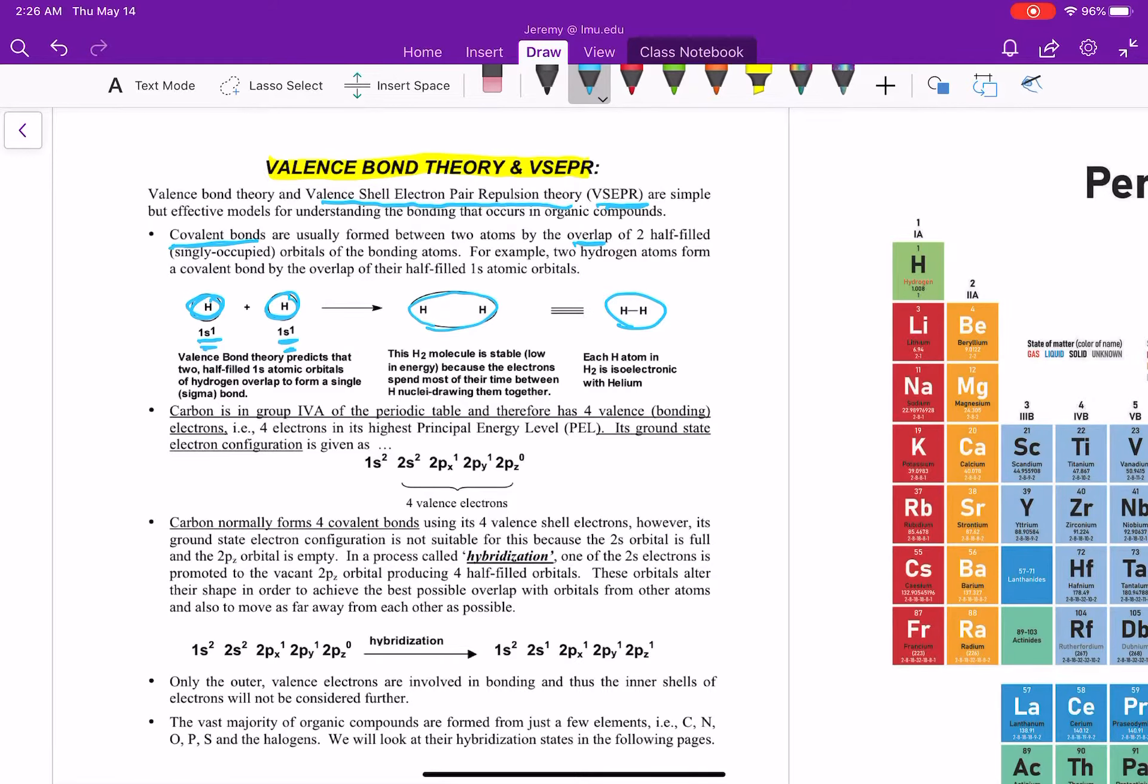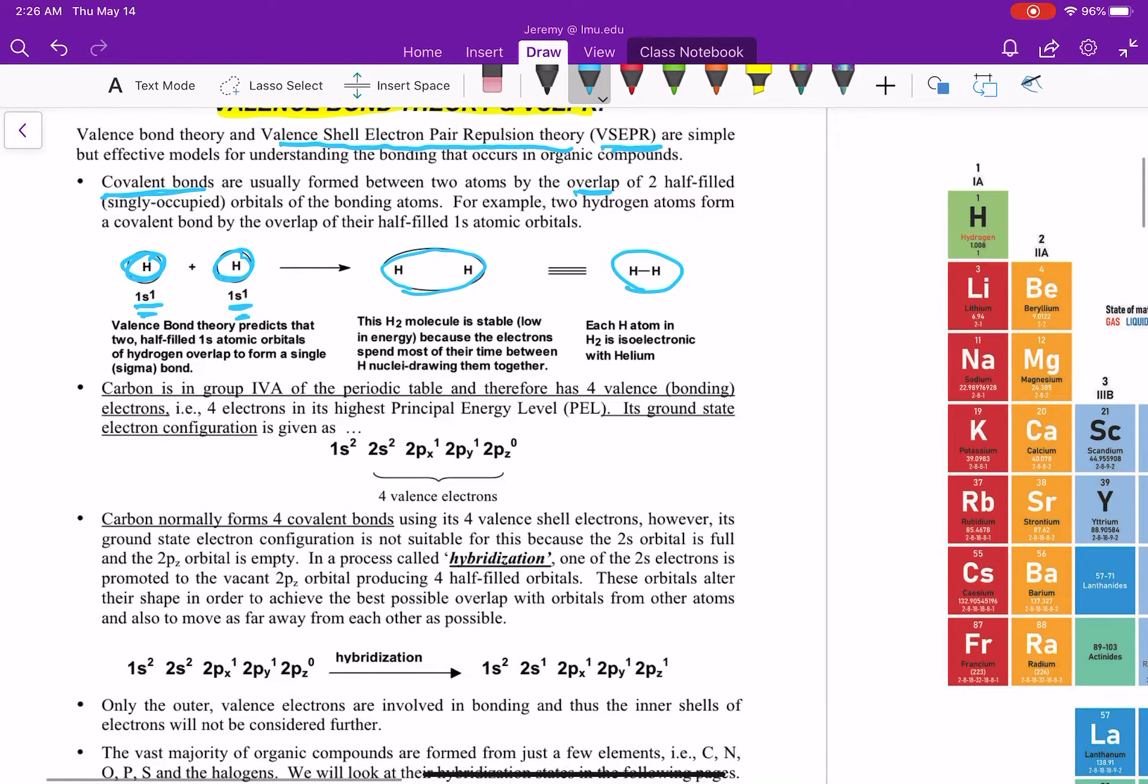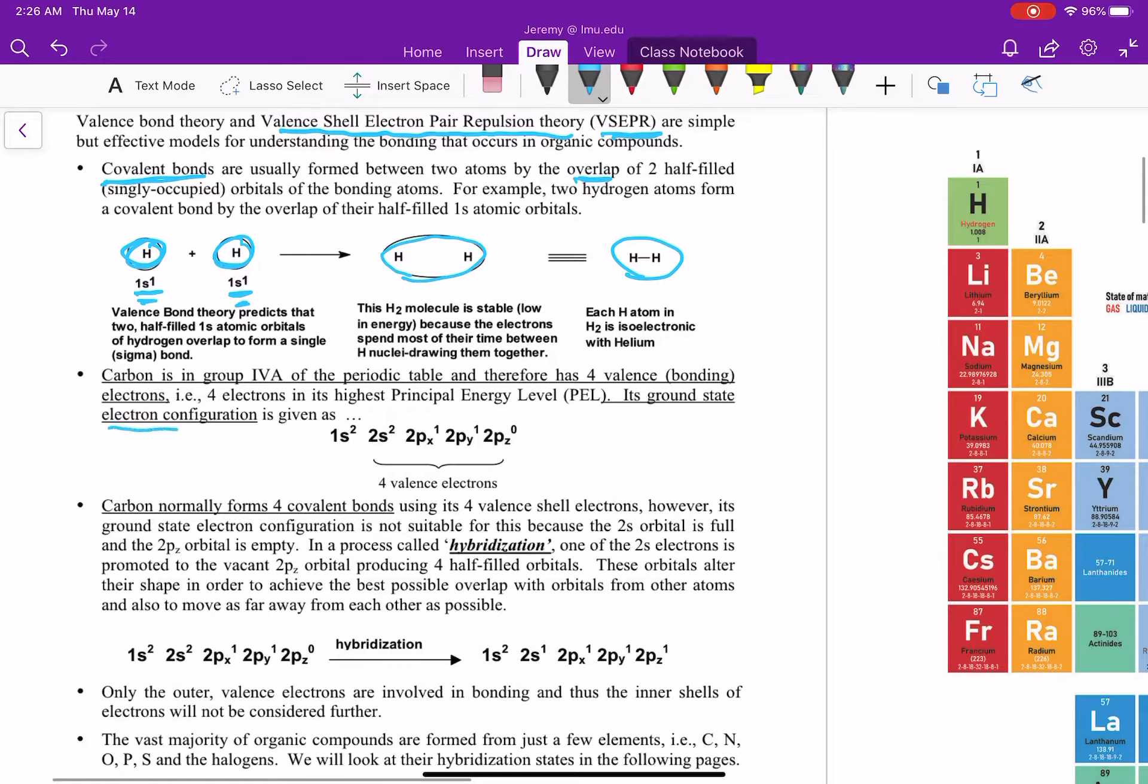Obviously, we're going to have a lot more complex examples. So let's talk about carbon. And what we really need to do is start talking about its electron configuration. So this is a concept from general chemistry. So if you look at the electron configuration of carbon, it's 1s2, two electrons in the s orbital, 2s2, two electrons in the 2s orbital, and then there's two electrons in the p orbitals.